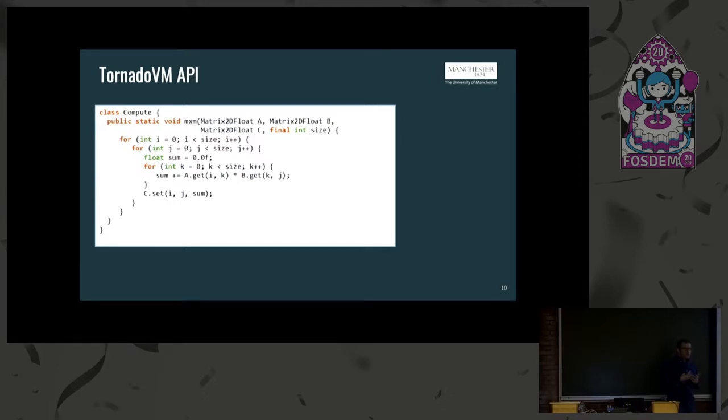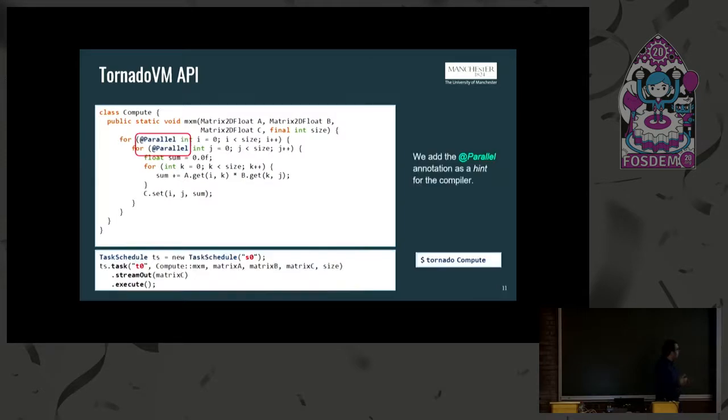This is now an example of how the user can use TornadoVM, so how they can specify that this code could be parallelized on the hardware, on a GPU for example. So this is a class Compute that has one method, the MXM, that computes the matrix multiplication of two arrays A and B, and the result is stored into the C array. The only way that the programmer can parallelize the code with TornadoVM is by using the @Parallel annotation, which is an annotation exposed to the programmer in order to indicate that these parallel loops could be parallelized. So this is a hint, and that's all done with the modification of the method. So with this, Tornado is able to parallelize the loops, apply specializations for the hardware devices, and then execute it and get performance for free.